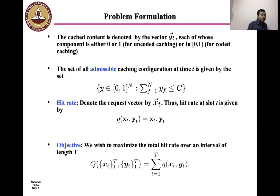Next, we formulate the problem. The cached content is denoted by an n-dimensional vector yt. Each component of yt for the case of uncoded caching could be either 0 or 1, that's binary. For the case of coded caching, it could be any number between 0 and 1. Each component of yt represents the fraction of the files in the case of coded caching and the existence of the files in the case of uncoded caching.